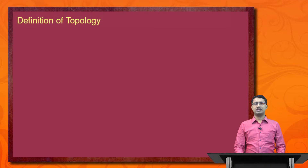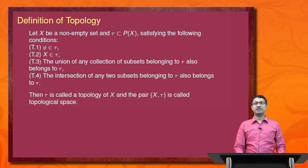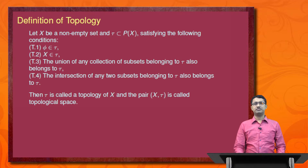Now we go to the definition of topology. Let X be a non-empty set and tau be a subset of the power set of X. Tau is called a topology if it satisfies the following conditions: first, phi belongs to tau; second, X belongs to tau; third, the union of any collection of subsets belonging to tau also belongs to tau; and finally, the intersection of any two subsets belonging to tau also belongs to tau. Then tau is called a topology on X and the pair (X, tau) is called a topological space.